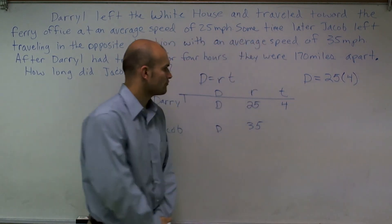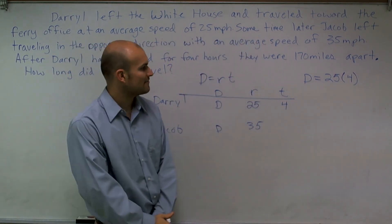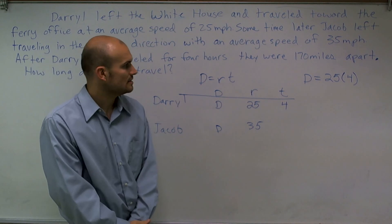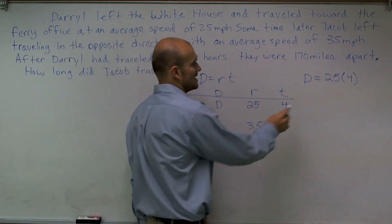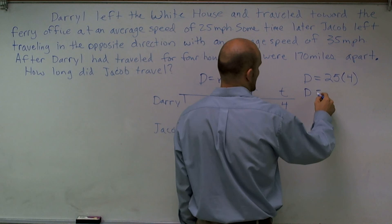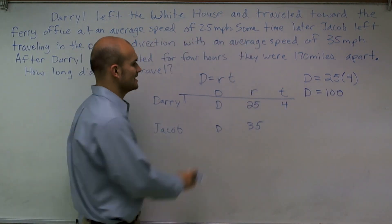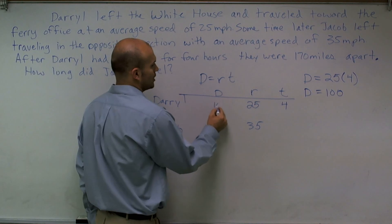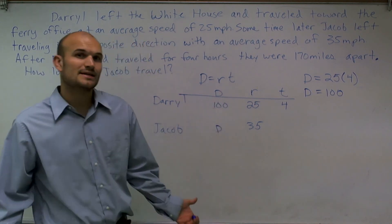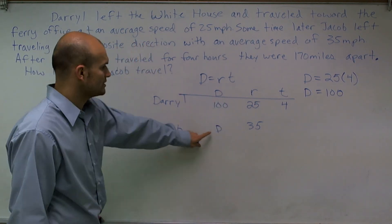Where my rate is 25 miles per hour and four is my time for four hours. So I can multiply and I can say at four hours, Daryl traveled 100 miles. So now I know that Daryl's D is going to equal 100 miles. However, what we need to figure out is what Jacob traveled.